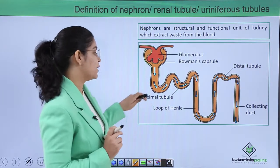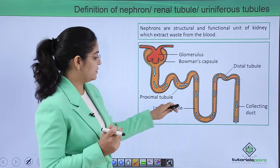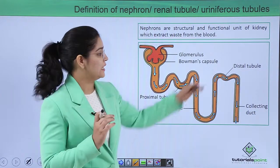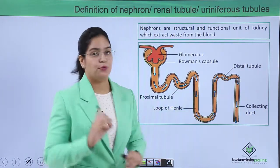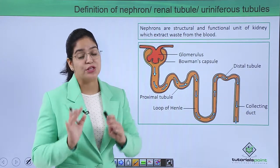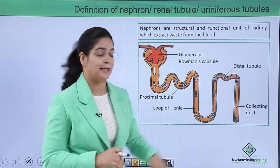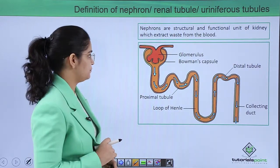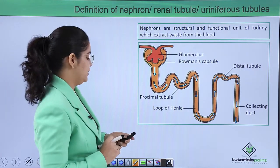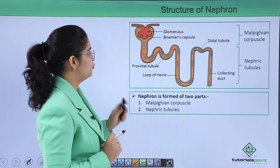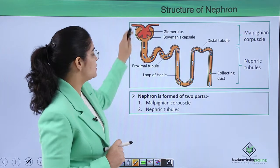After the proximal tubule comes the loop of Henle, then the distal convoluted tubule, and finally the collecting duct, where urine collects. The nephron is divided into two main parts: the bowl structure called the Malpighian capsule, and the tubular structure called the nephric tubule.